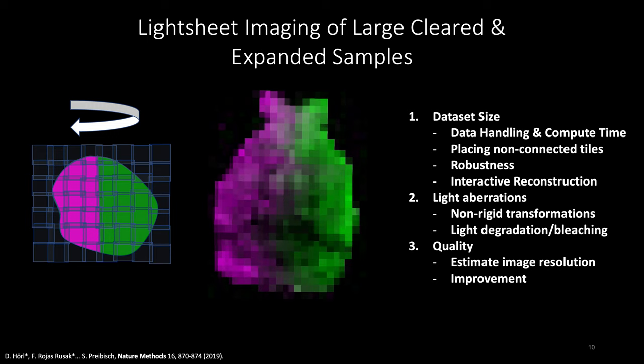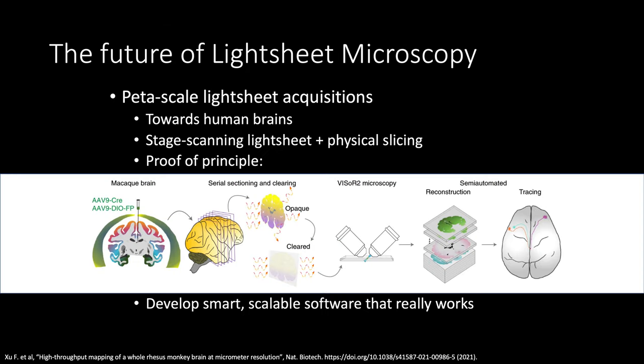I don't want to spend much time on BigStitcher today, but for those who might not have heard of it, this exists. It's a Fiji plugin, you activate your BigStitcher update site and you're good to go. What I want to talk about today is the future, where this all goes. The new effort is towards petascale light sheet microscopy acquisitions. People want to image entire human brains now on the light sheet microscope. They typically do this with a different type of microscopy setup.